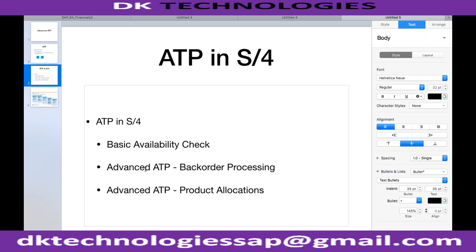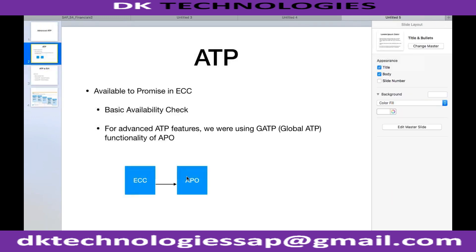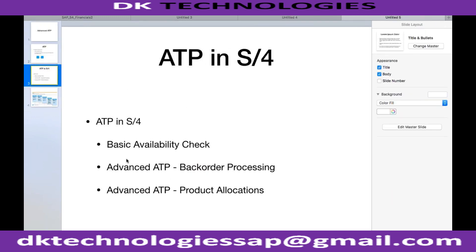These are important functionalities available only in SAP S4 HANA without needing to go to an APO box. If I want to use advanced ATP features now — for backorder processing or product allocations — earlier these were only available in APO, requiring a separate APO system. But now these advanced ATP features are pre-delivered in our S4 HANA box itself. We don't need two systems like ECC and APO; in one single system we can carry out all these processes. That is the biggest advantage of ATP in SAP S4 HANA.